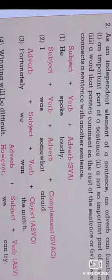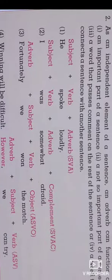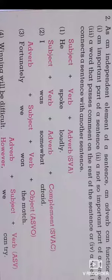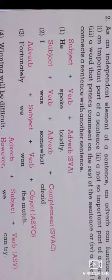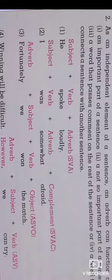Below we have the elements showing how adverbs come into the sentence. The first sentence is 'He spoke loudly.' Here 'he' is the subject, 'spoke' is the verb, and 'loudly' is the adverb. The shortcut is SVA: S means subject, V means verb, and A means adverb. So the grammatical pattern is subject plus verb plus adverb.